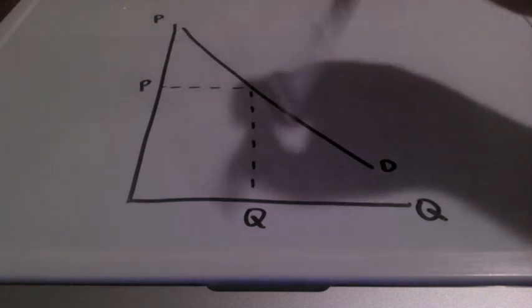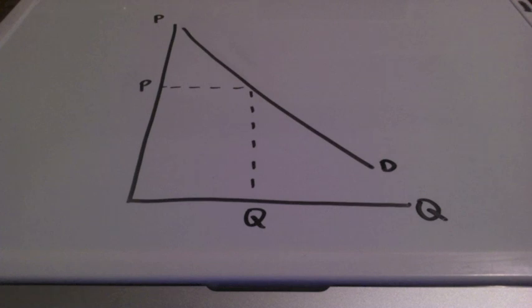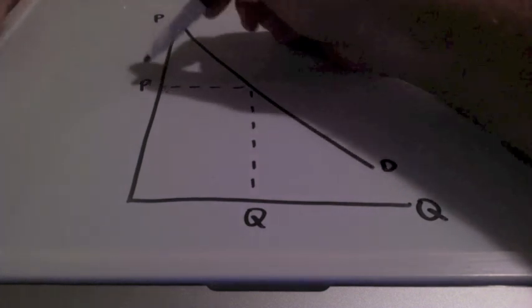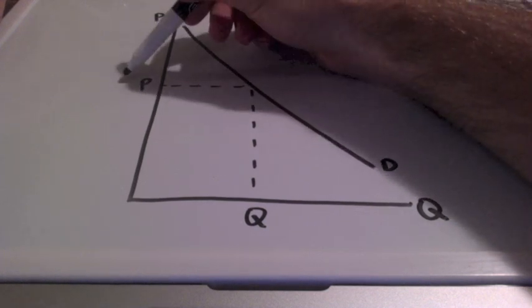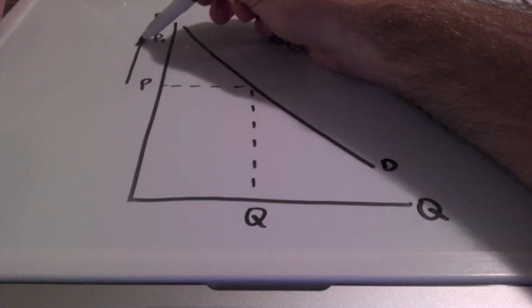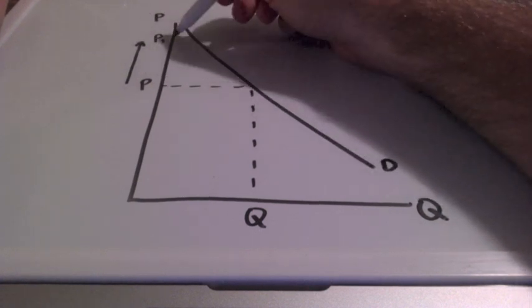So P and Q represent our equilibrium. Let's say, for example, that prices increase from P to P1. We have an increase in our price.